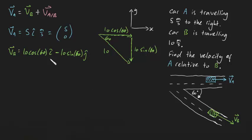Now, once again, I usually don't like writing things in terms of i and j format. So let me just change that up a little bit and write this as (10 cosine 60, -10 sine 60).